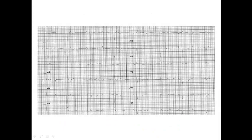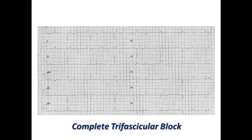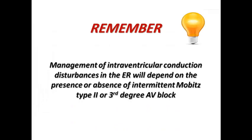Here is another example with slightly atypical right bundle branch block morphology, but predominantly positive complexes in II, III, and AVF and predominantly negative in I and AVL — right axis deviation indicating left posterior fascicular block combined with right bundle branch block. There is also complete AV dissociation with P waves completely dissociated from QRS complexes, representing complete trifascicular block. Management of intraventricular conduction disturbance in the ER depends on the presence or absence of intermittent Mobitz type II or third degree AV block, determining whether the patient needs admission and permanent pacemaker or can be discharged with follow-up.